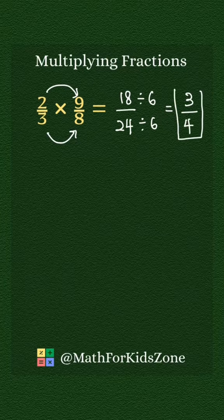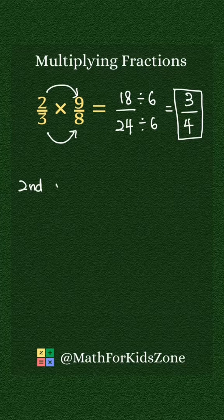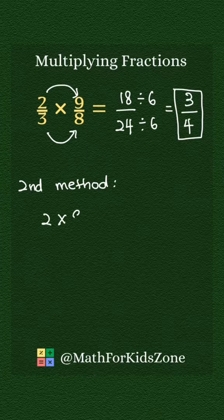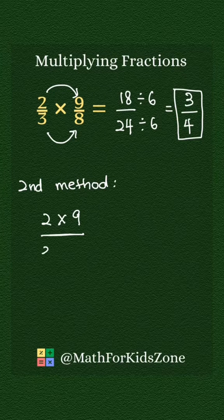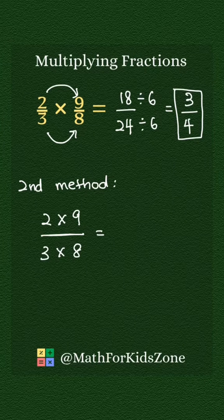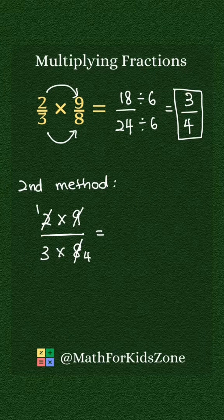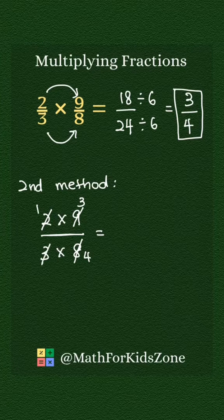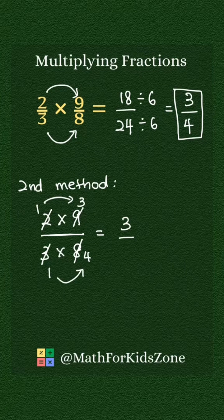Answer is 3 over 4. Now for 2 times 9 over 3 times 8, simplify first. 2 divided by 2 is 1. 8 divided by 2 is 4. 9 divided by 3 is 3. 3 divided by 3 is 1. 1 times 3 is 3. 1 times 4 is 4. Answer is 3 over 4.